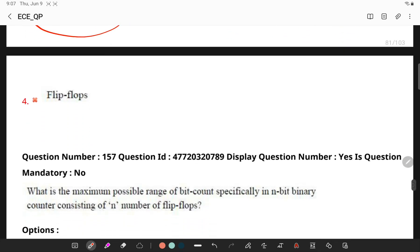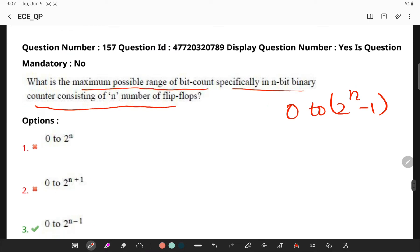Now, let's get back to the next question. What is the maximum possible range of bitcount specified in n-bit binary counter consisting of n flip-flops? Remember, the maximum possible range of bitcount specifically in an n-bit counter having n flip-flops is given by the formula 0 to 2 power n minus 1. You can see the options.